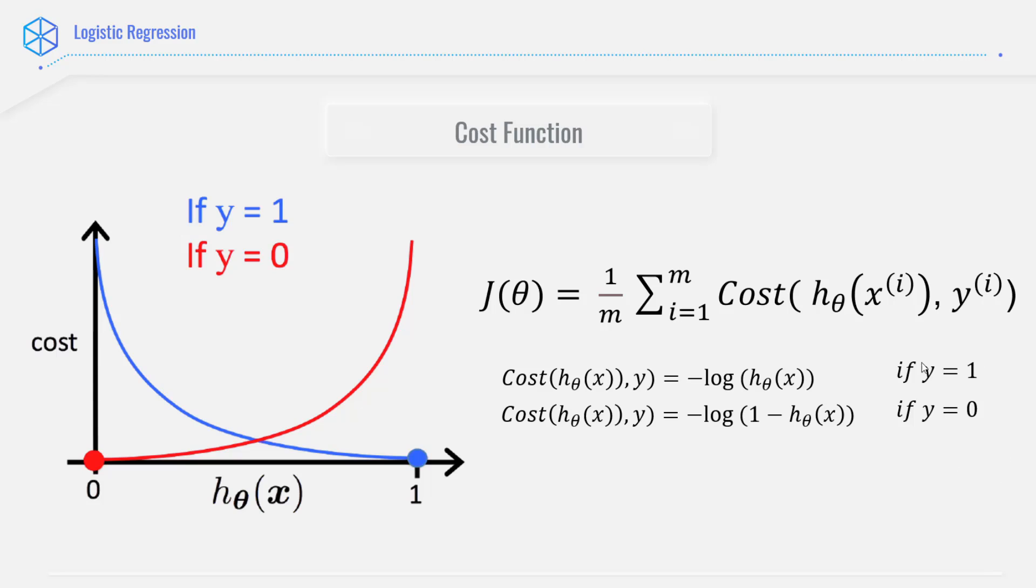As you can see, in this cost function, if y equals to 1, we have this particular function that is negative logarithm of h. So basically, it's this blue line.